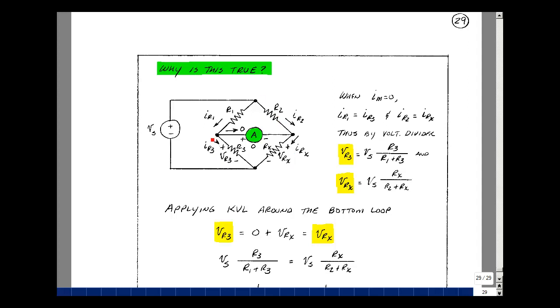When you have the same current in two elements, they're said to be in series, although this doesn't look like it's in series. R1 and R3 are, and so are R2 and R sub x, because there's no current here. So we can use the voltage divider rule.